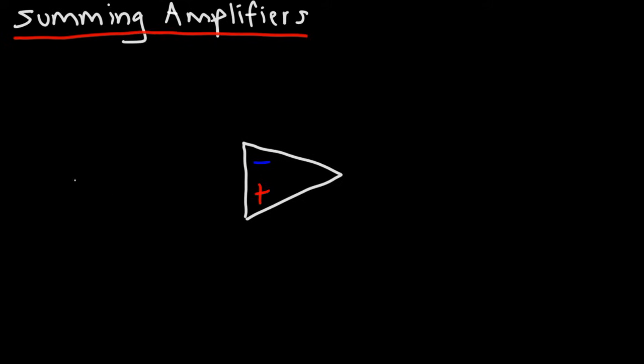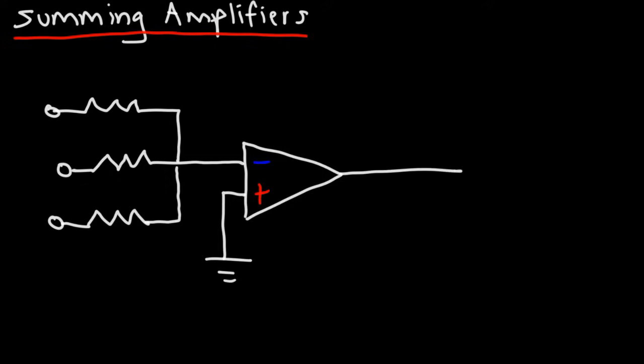So I'm going to draw the circuit real quick. I'm going to use three input voltages. And here is the third one. The non-inverting input, we're going to send it to ground.